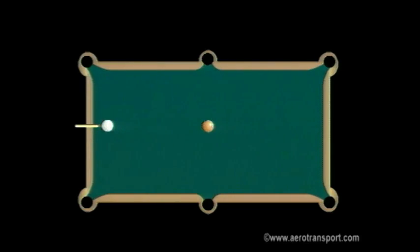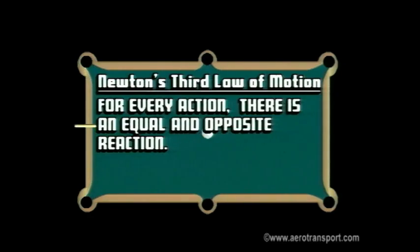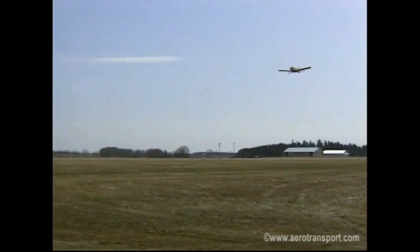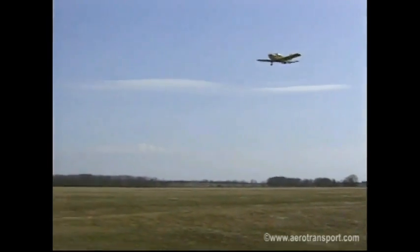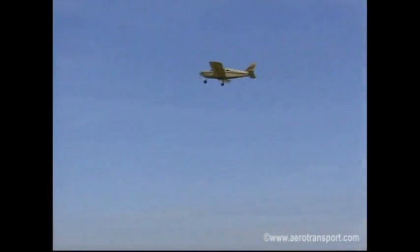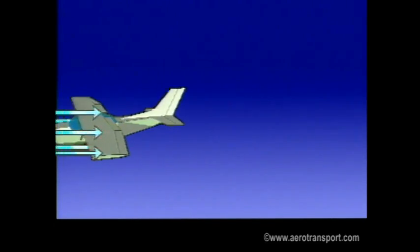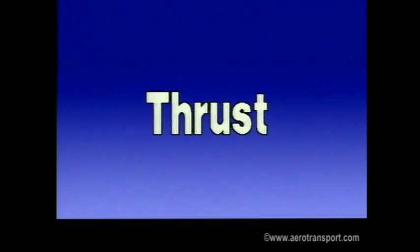Much of what we deal with in this program is based on Newton's third law of motion. Simply put, it states that for every action, there is an equal and opposite reaction. How does this apply to an airplane? As a propeller moves a mass of air backwards, there is an equal force that moves the plane forward. This is called thrust. More about that when the four forces of flight are discussed.